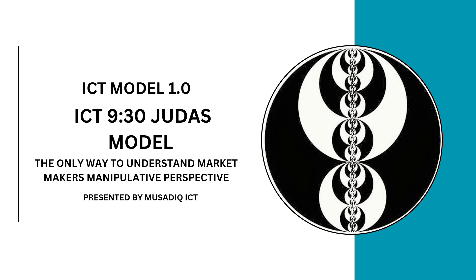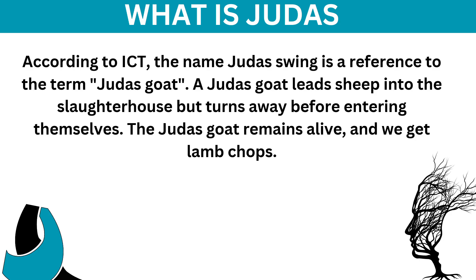What's up guys, so this is Model One which I use for my personal use. This is the ICD 9:30 Judas model. This is a very powerful model — if you stick to it, it will lead you to profitability. Now, what is 'Judas' according to ICD? The name 'Judas Wing' is a reference to the term 'Judas goat.'